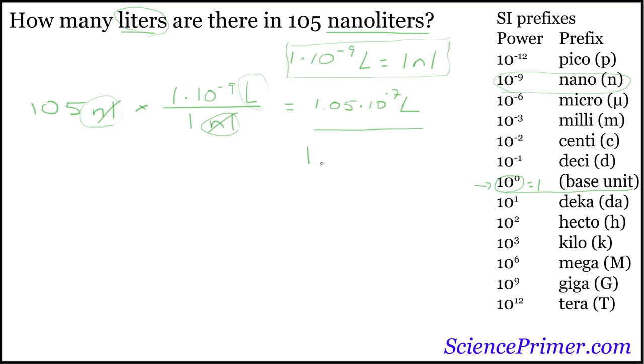Rather than write the times 10 to the negative 7, you write 1.05E negative 7. This is the answer you would put in to solve that problem.